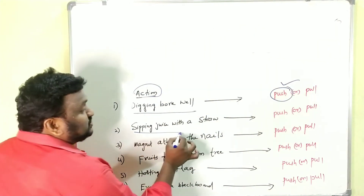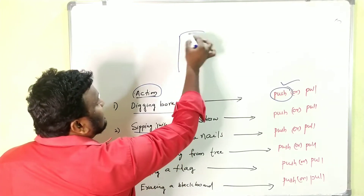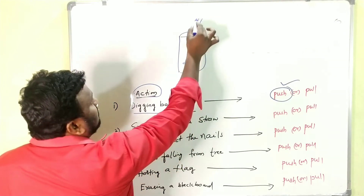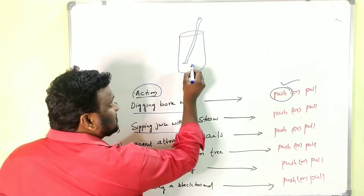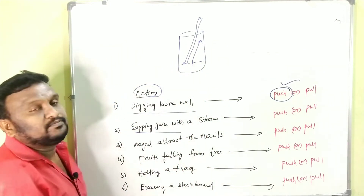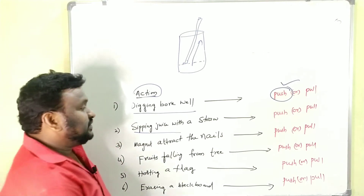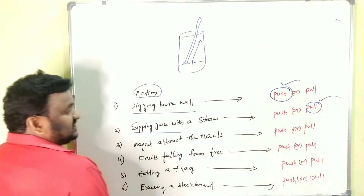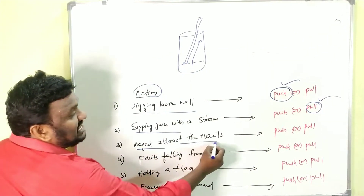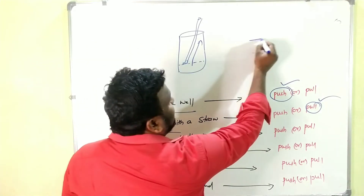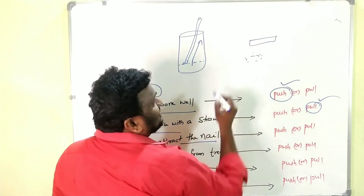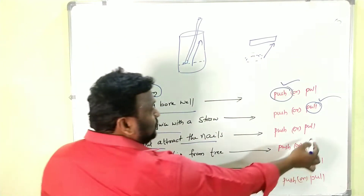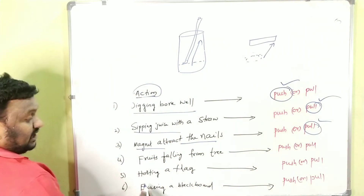Sipping juice with a straw: there is a glass with juice and a straw. We sip it — the juice moves upward. That means we are pulling it, so sipping juice with a straw is pull. Magnet attracts nails: a magnet with nails in its surrounding — they are attracted towards the magnet. It means the magnet is pulling the nails, so this is also pull.